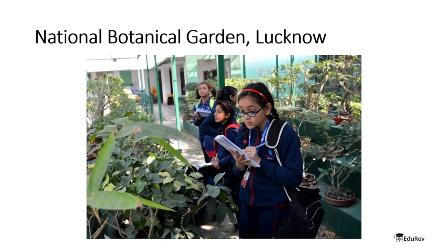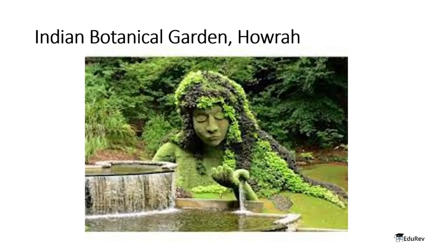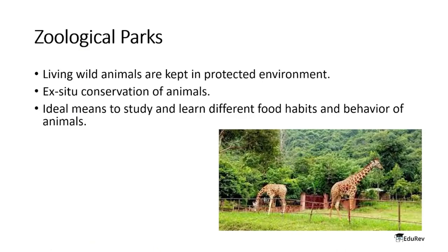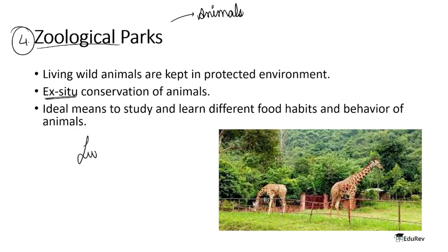The fourth taxonomical aid is zoological parks — for animals. Zoological parks are also ex-situ conservation: animals are taken from their natural habitat and conserved in a different protected environment where no one can hunt or harm them. Zoological parks are an ideal place to study the food habits and behavior of animals.